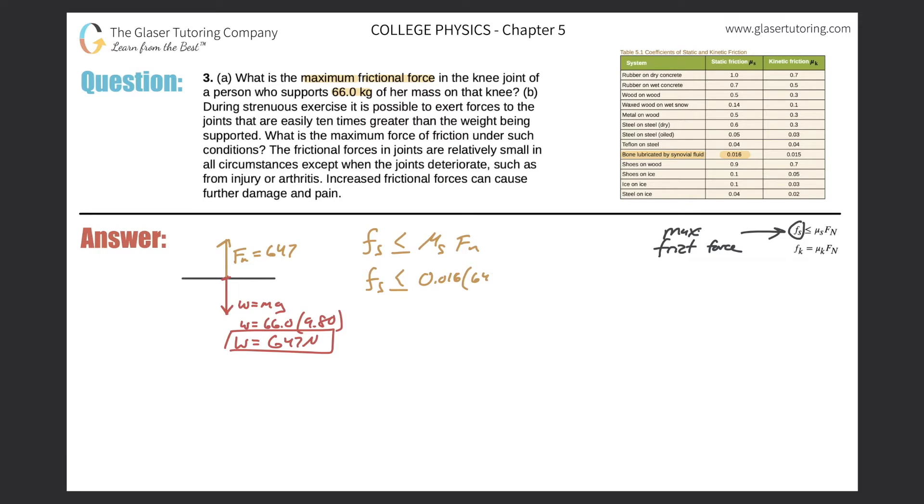Simply just plug in the values now. So the force of static friction has to be less than or equal to 0.016 multiplied by that normal force of 647. So we get the maximum force here has to be less than or equal to 0.016 times 647, so 10.4. If we do sig figs - well there's only two sig figs actually in the coefficient, so looks like it's just going to be 10 newtons. That takes care of letter A.